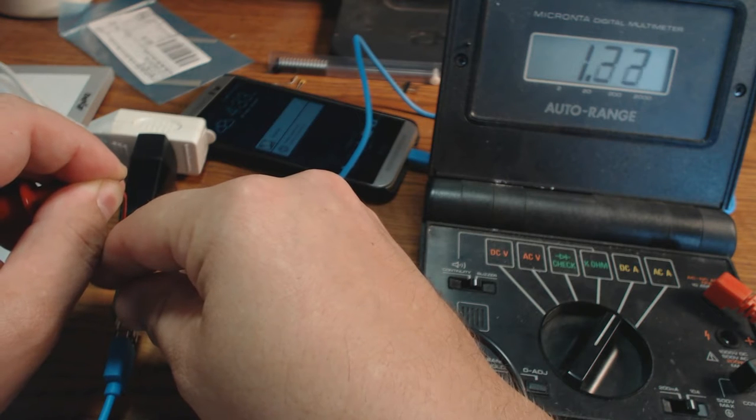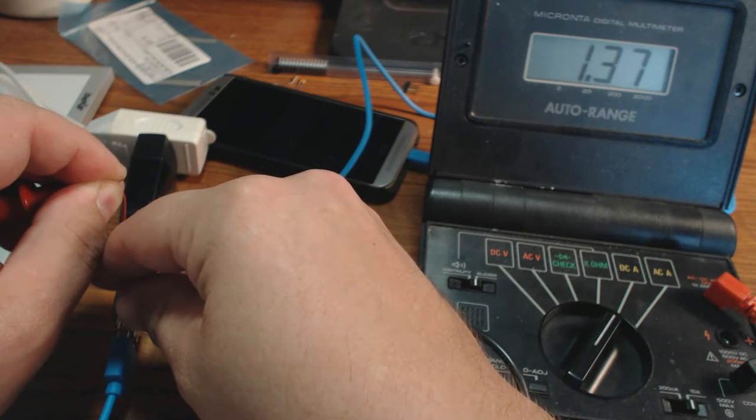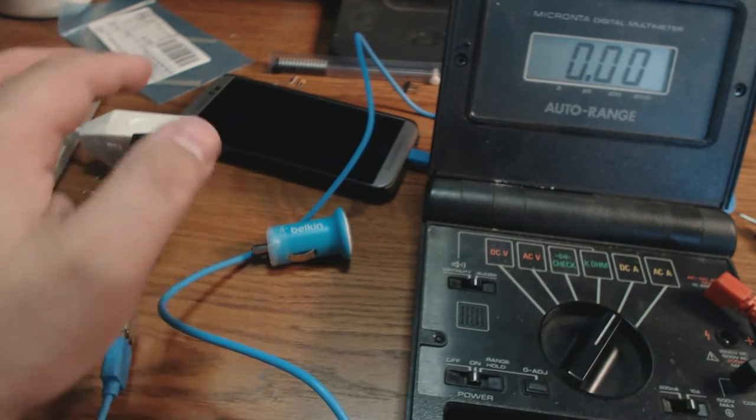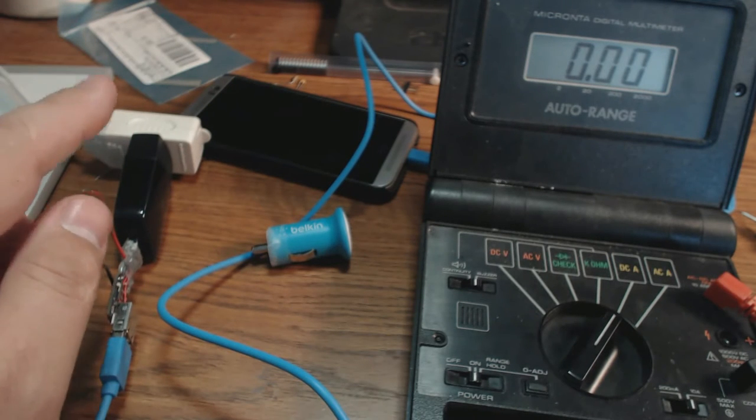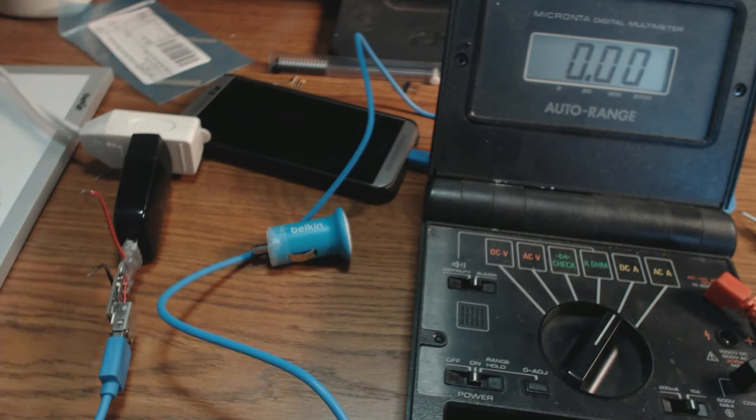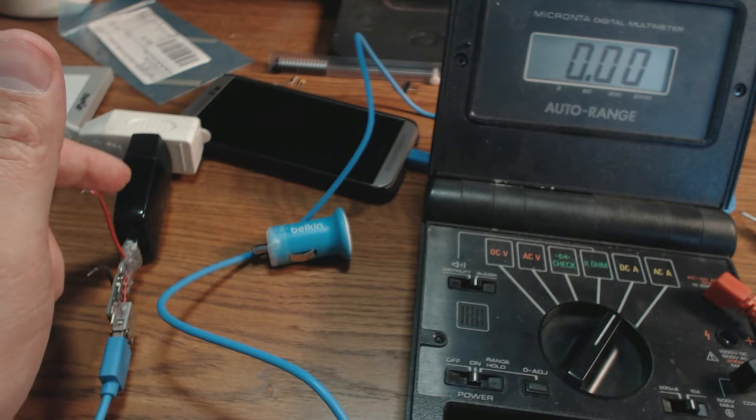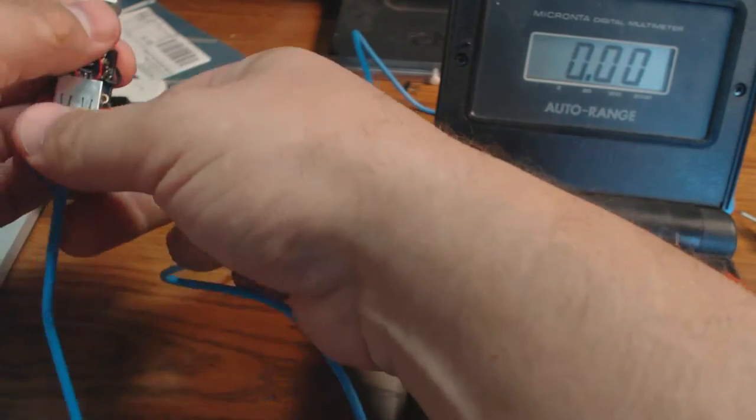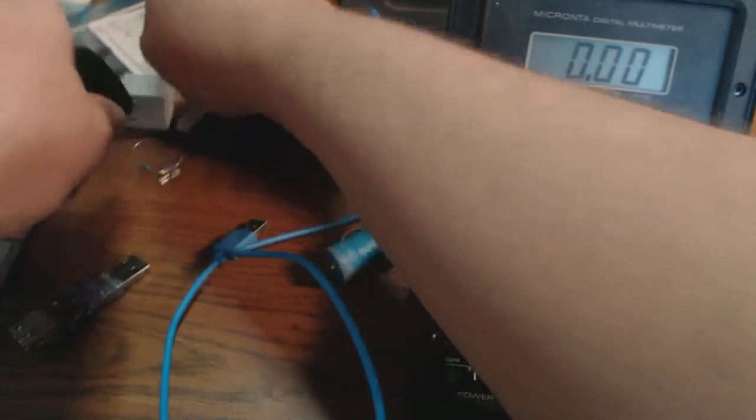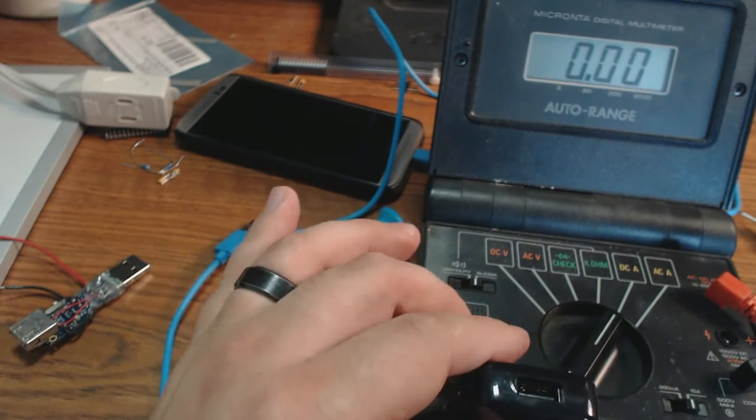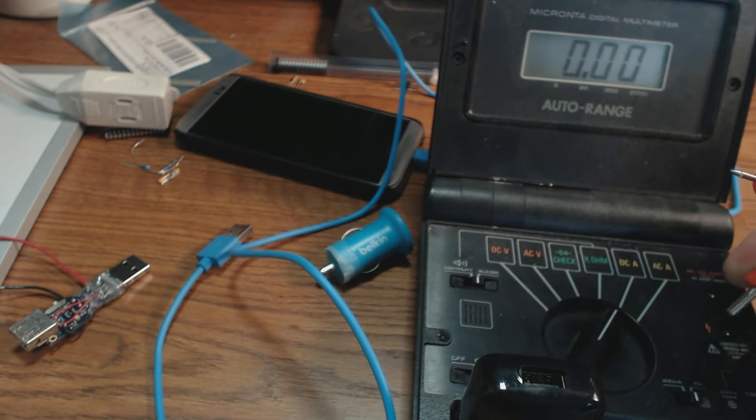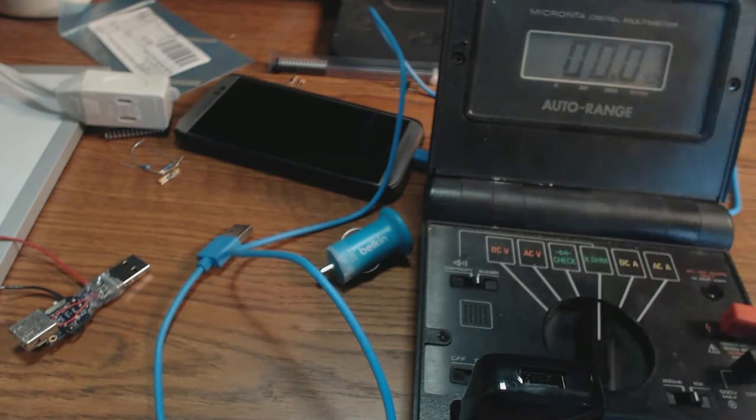The way it recognizes this is using something called a dedicated charging port. So this charger shows up to the phone as a dedicated charging port. And I've checked. And the way this charger shows the phone that it's a dedicated charging port is that the USB lines are shorted together inside the charger. So let me see if I can demonstrate this for you.